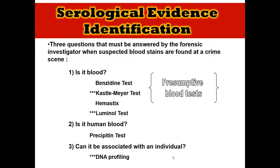A presumptive blood test is an on-the-scene qualitative analysis that identifies or confirms the presence or absence of a substance in a sample. These tests use a chemical reaction to identify a positive result. One commonly used presumptive blood test is the Castlemayer test. The Castlemayer reagent is a chemical indicator — specifically phenolphthalein — that reacts with hemoglobin in blood. If it detects hemoglobin, it will indicate the presence of blood by turning a bright magenta or really bright pink color. I'll show you a picture of that in the next couple of slides.